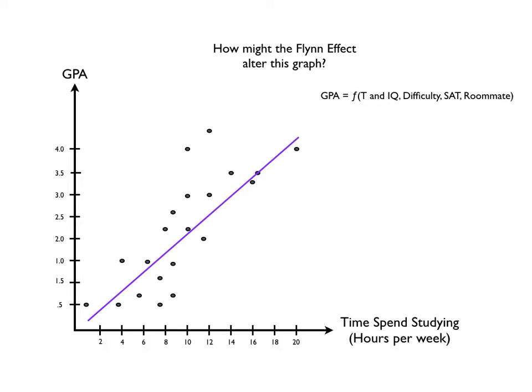So if IQ changes due to the Flynn effect, then it's going to shift upward like this. And for any given amount of time spent studying, average GPA should rise. And that's why the shift upward. Now I haven't moved all the dots upward, but they would shift upward as well. I'm just showing that the line shifts because that is a change in the overall GPA scale given that the IQ changed.